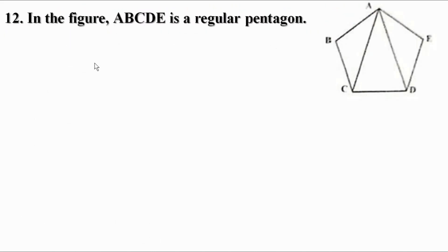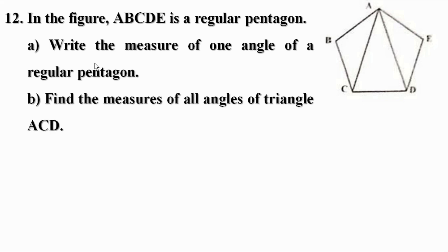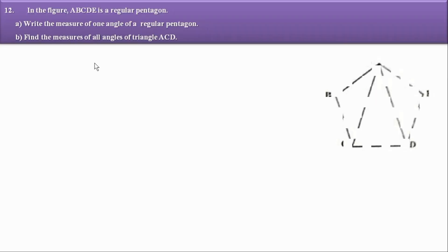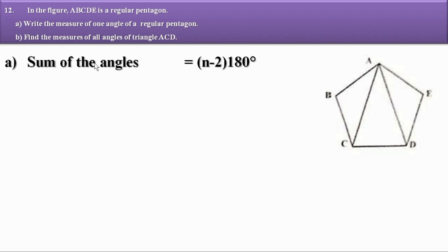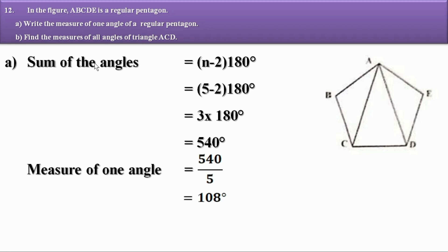Problem 12: In the figure, ABCD is a regular pentagon. Write the measure of one angle of a regular pentagon and find the measures of all the angles of triangle ACD. The sum of angles of a polygon equals (n - 2) × 180°. For a pentagon, n = 5, so (5 - 2) × 180° = 3 × 180° = 540°. Since it is a regular pentagon, all angles are equal, so each angle = 540 ÷ 5 = 108°.